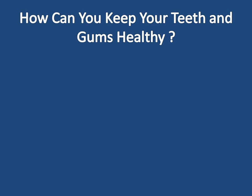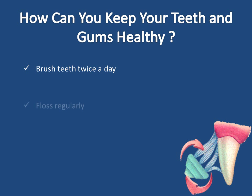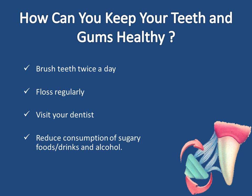How can you keep your teeth and gums healthy? Brush teeth twice a day with fluoride toothpaste. Floss regularly to remove plaque from between teeth, or use a device such as a special brush or wooden or plastic pick recommended by a dental professional. Visit your dentist routinely for a check-up and professional cleaning. Reduce the frequency and consumption of sugary foods and drinks and alcohol. Don't smoke.